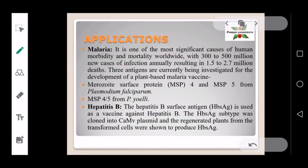Malaria is one of the most significant causes of human morbidity and mortality worldwide, with 300 to 500 million new cases of infection annually, leading to 1.5 to 2.7 million deaths. Currently, three antigens are being investigated for the development of plant-based malaria vaccines.